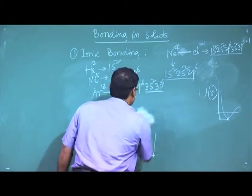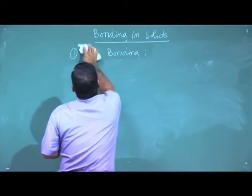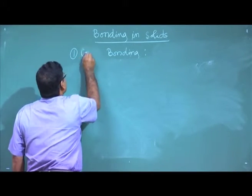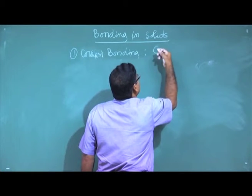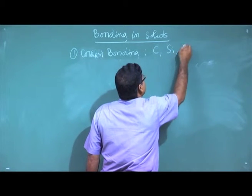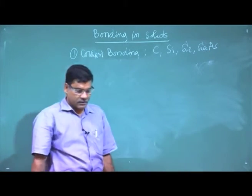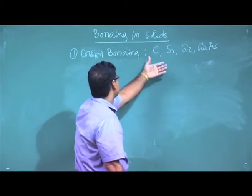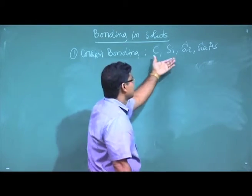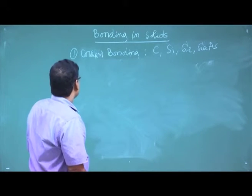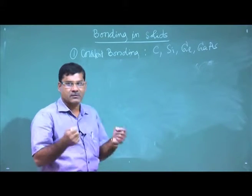Next, covalent bonding. Examples include carbon, silicon, germanium, and gallium arsenide. These are the materials where covalent bonding is responsible for the formation of solid crystals. Covalent bonding involves the sharing of electrons between two atoms.